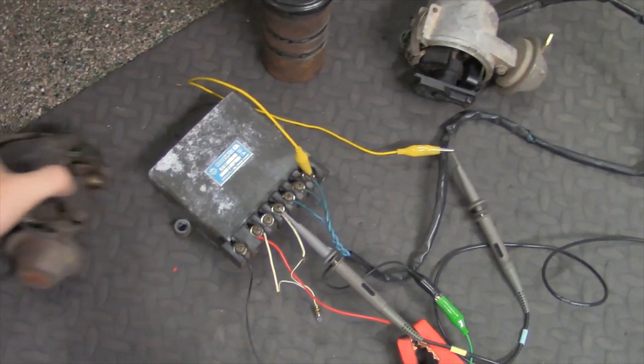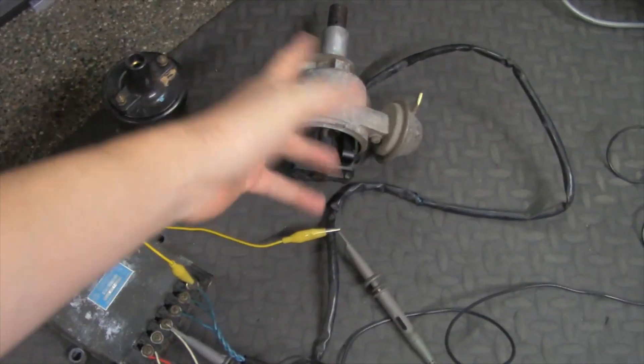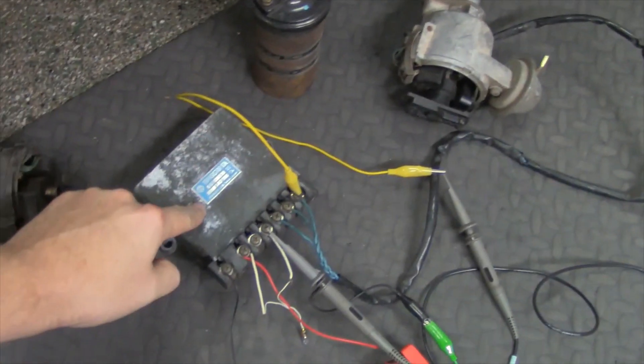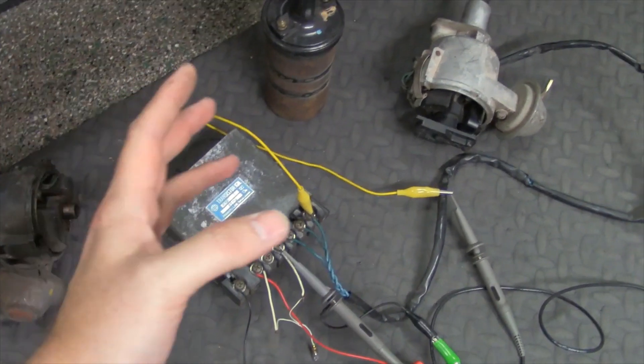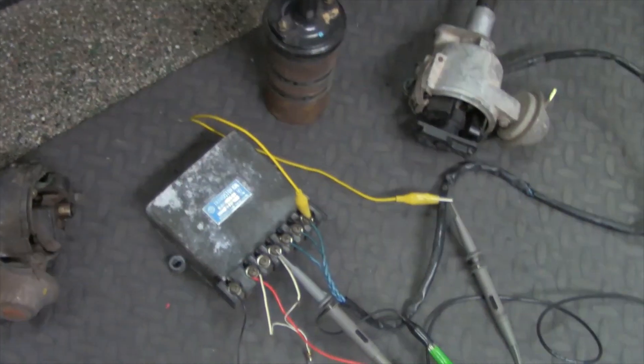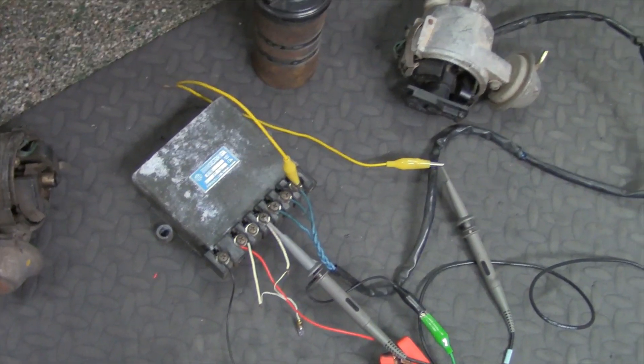For those that don't know where this stuff is in the car, well this is on the engine. And then this is under the dash. This is actually under the passenger side dash. And so that's where all this is located.